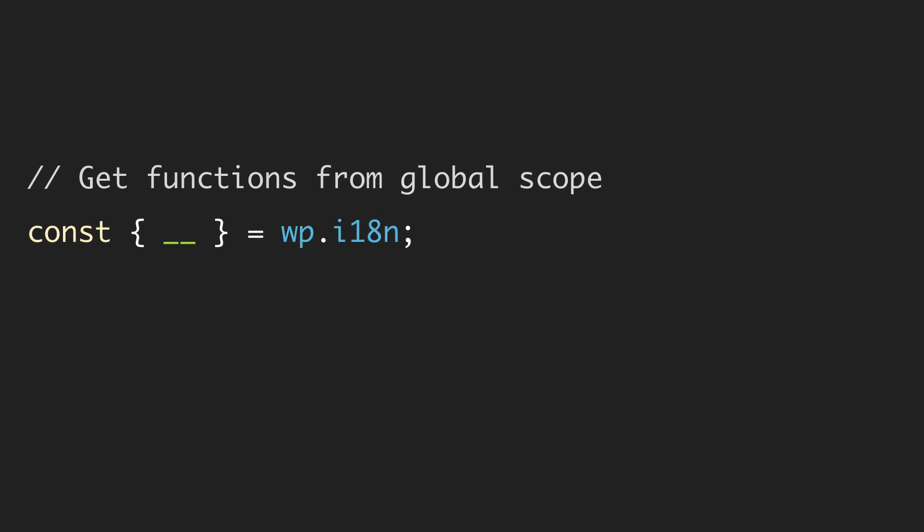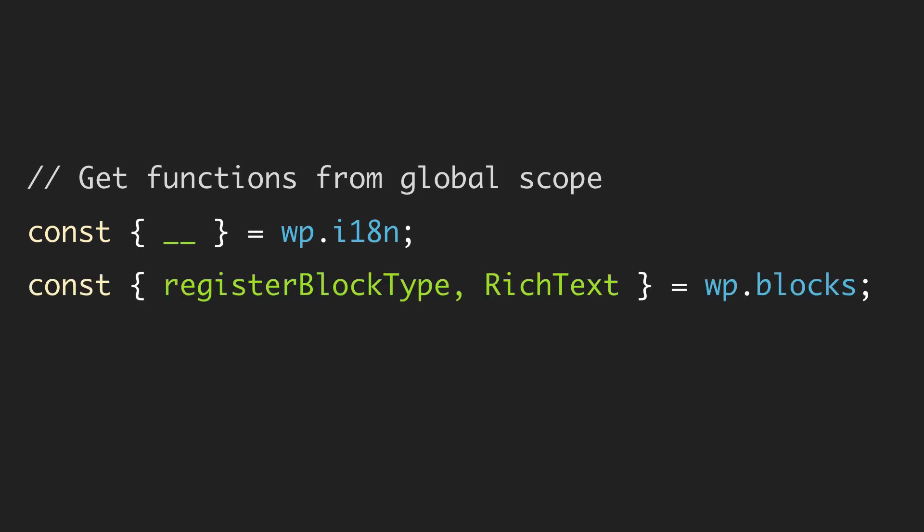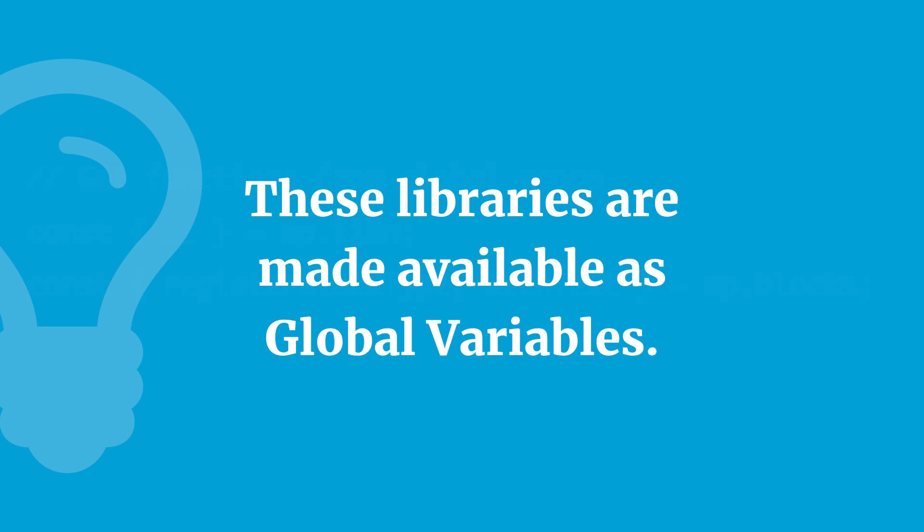In the code, how we would reference getting functions from global scope would look something more like this. This is using object destructuring to basically grab a method off of the i18n internationalization library that's stored inside the wp global variable. So in our code, we could just refer to wp.i18n and we'll make sure that we enqueue it properly, which we will learn. Here's another example of pulling stuff out of the blocks library — now in our code we just have a function named registerBlockType and richText. We could use those either as functions or components depending on what they are. The important thing at this point is just that these libraries are made available as global variables.